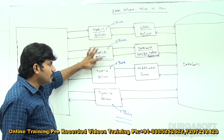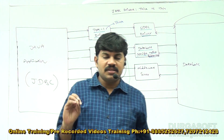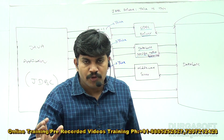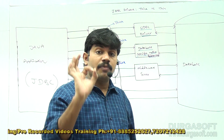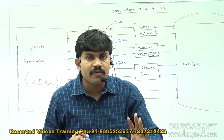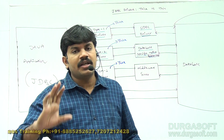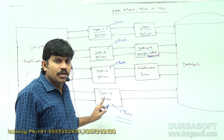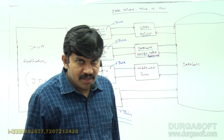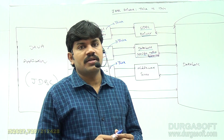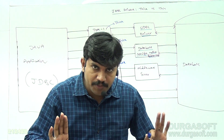Type 1, Type 2, Type 3 drivers are thick drivers. Type 4 driver is a thin driver. In an interview, if someone asks the difference between thick driver and thin driver: if the database driver requires some extra component to communicate with the database, such a driver is called a thick driver — examples are Type 1, Type 2, Type 3. If the driver software won't require any extra component and can directly communicate with the database, such type of driver is called a thin driver — example is Type 4 driver.